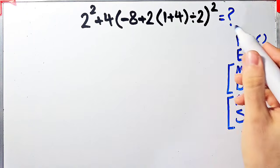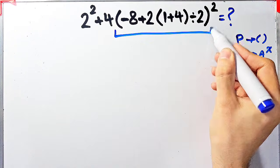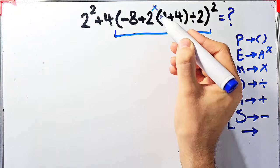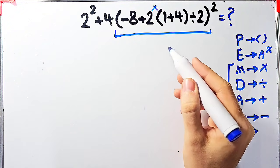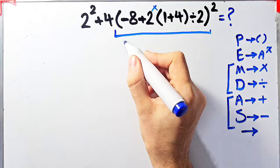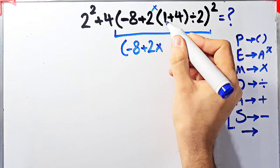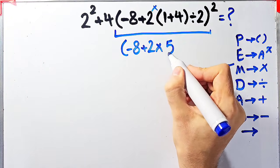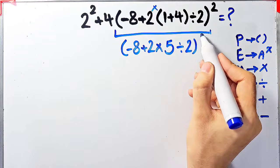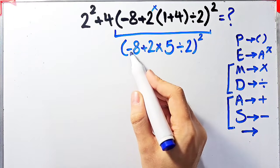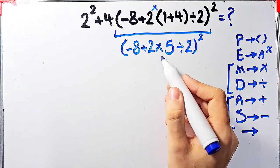In this question, first we simplify the parentheses. Inside these parentheses we have addition, multiplication, parentheses, and division. According to the PEMDAS rule, first we simplify the inner parentheses: we have negative 8 plus 2 times (1 plus 4), which equals 5, then divided by 2.